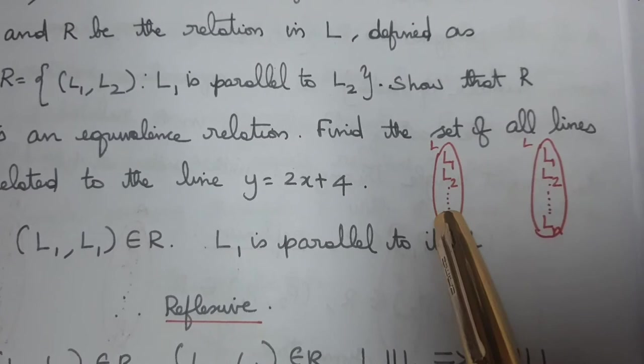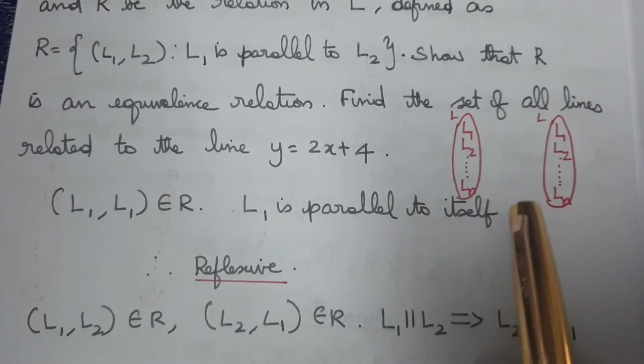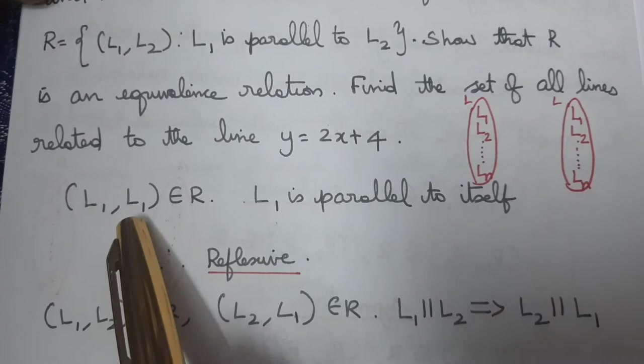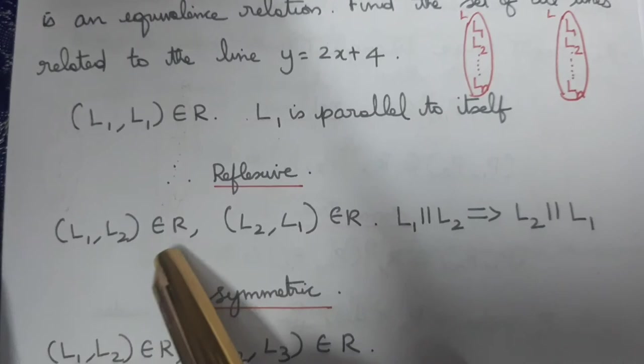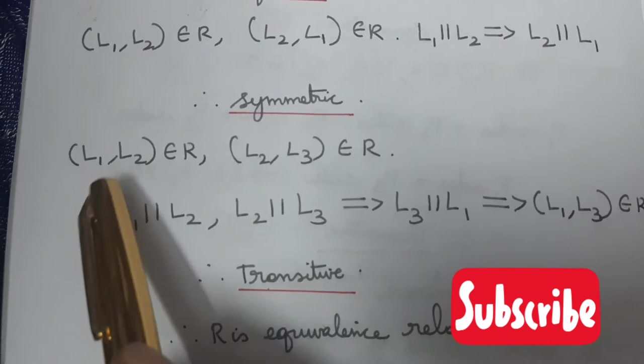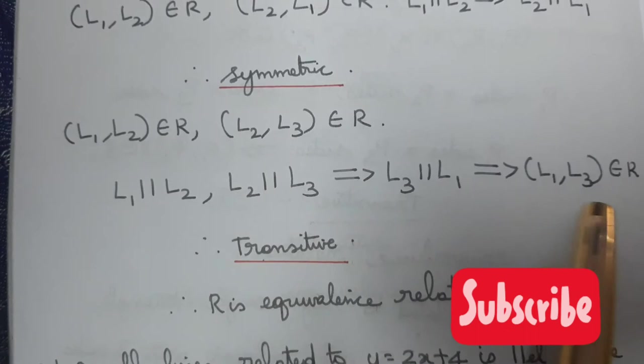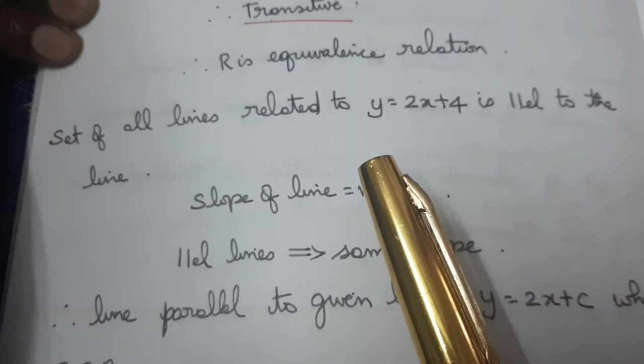So first, the set is {L1, L2, L3, ..., Ln}. For reflexivity: L1 is parallel to L1, so (L1, L1) belongs to R, and R is reflexive. For symmetry: if L1 is parallel to L2, then L2 is parallel to L1. For transitivity: if L1 is parallel to L2 and L2 is parallel to L3, then L1 is parallel to L3. Therefore R is an equivalence relation.